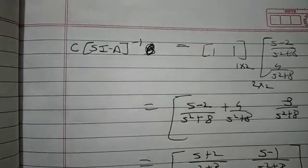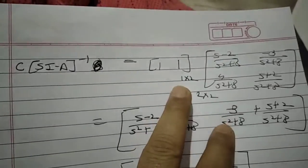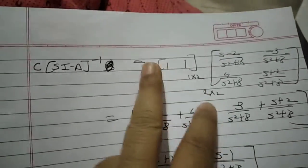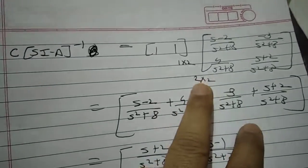After that you have to multiply this inverse with C. C matrix is 1, 1. So 1, 1 has dimension 1 by 2. That is 1 row, 2 columns.